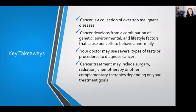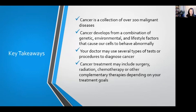Some key takeaways: Cancer is a collection of over 200 malignant diseases, so no two diagnoses will look or be treated exactly the same. Cancer develops from a combination of genetic, environmental, and lifestyle factors that cause our cells to behave abnormally. Your doctor may use several types of tests or procedures to diagnose, stage, and classify cancer. And cancer treatments might include surgery, radiation, chemotherapy, or other complementary therapies depending on your diagnosis and your goals. For more information, here are some helpful resources: the American Cancer Society, the International Association of Cancer Registries, the National Cancer Institute Comprehensive Cancer Information Site, the National Comprehensive Cancer Network, and the Cancer Atlas. Thank you.